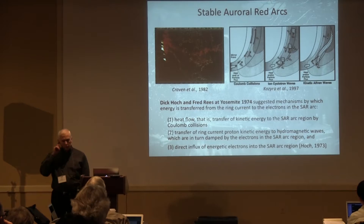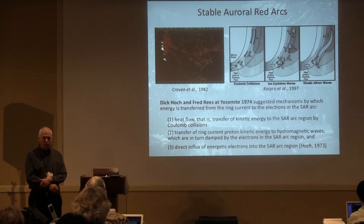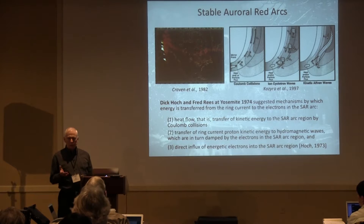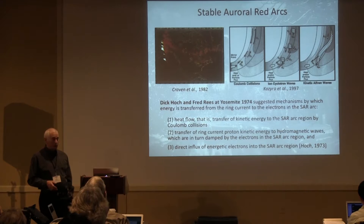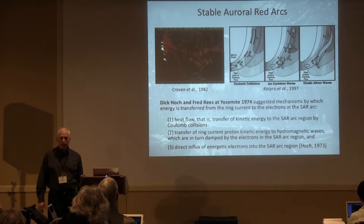Then I'd like to talk about the future — both in modeling and in future missions. SAR arcs: Dick Koch had just published a review paper in Reviews of Geophysics in '73, and it's a pretty current paper right now. Manfred Rees gave a talk at Yosemite on it, and they were both talking about electron heating. It happens during magnetic storms. It could be by Coulomb collisions, or by hydromagnetic waves that go into Cherenkov or Landau resonance with the ionospheric electrons, or by direct influx of energetic electrons.